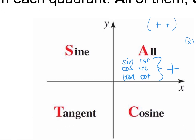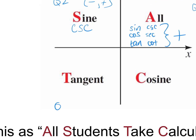In quadrant two, sine and its reciprocal cosecant are positive; everything else is negative. The X value is negative and the Y value is positive. In quadrant three, tangent and cotangent are positive. Think about it: tangent is Y over X, and a negative divided by a negative gives you a positive. Similarly, cotangent is X over Y — negative divided by negative is positive.